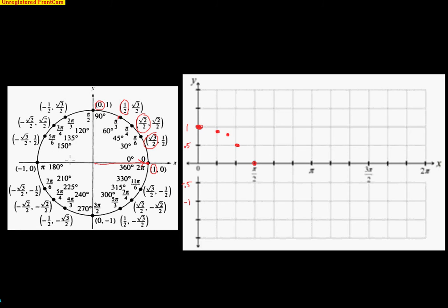Now we start growing in the negative direction because we're talking about the x-coordinate from the unit circle. At 2 pi over 3 we're at about negative 0.5. At 3 pi over 4 we're at about negative 0.7. At 5 pi over 6 we're at about negative 0.86. At pi, we're all the way down to negative 1 — the x-coordinate from the unit circle at pi is negative 1. Then we start climbing back up.